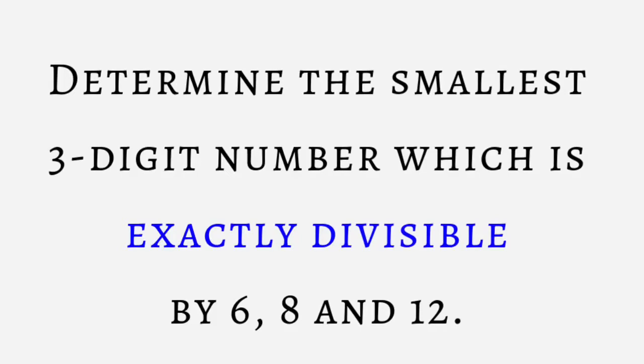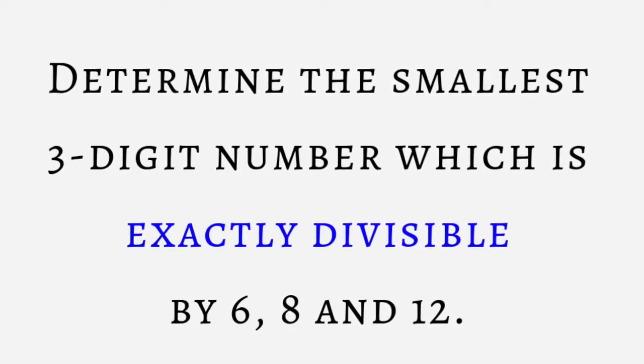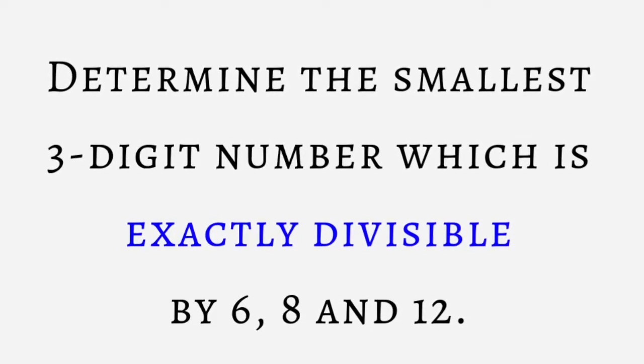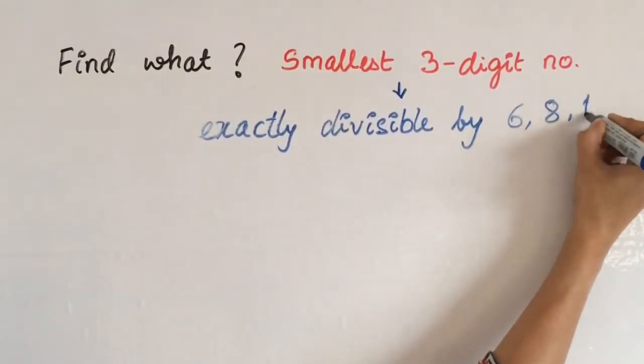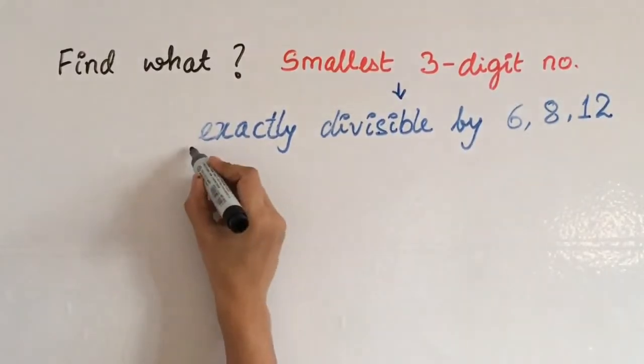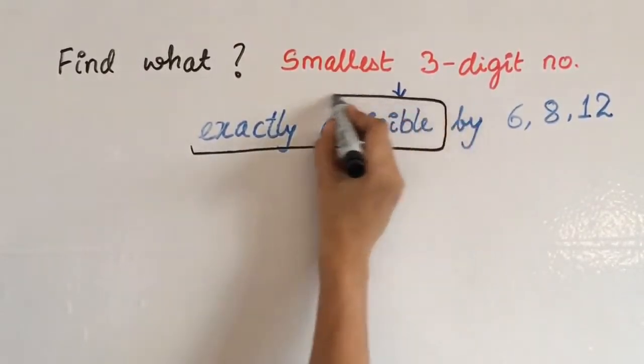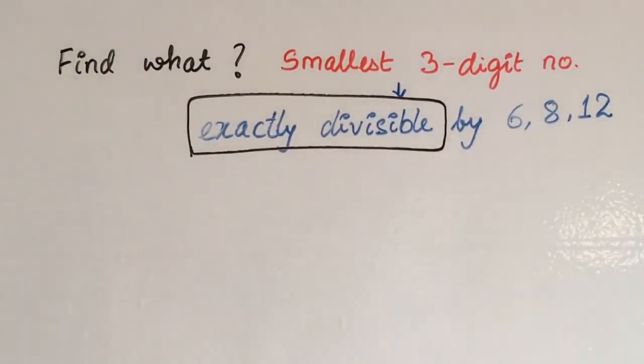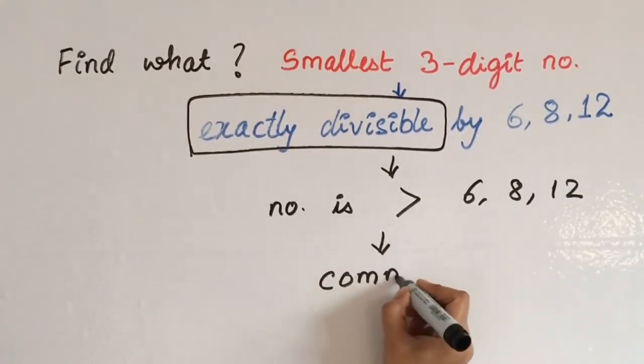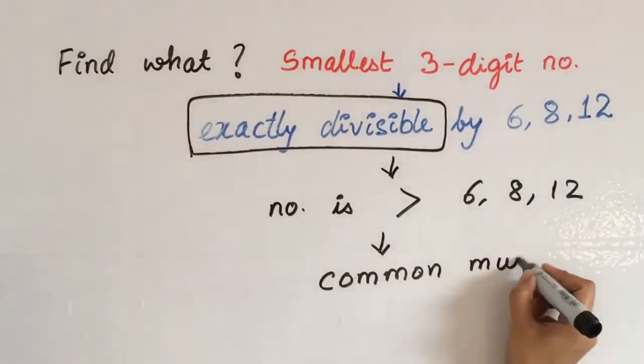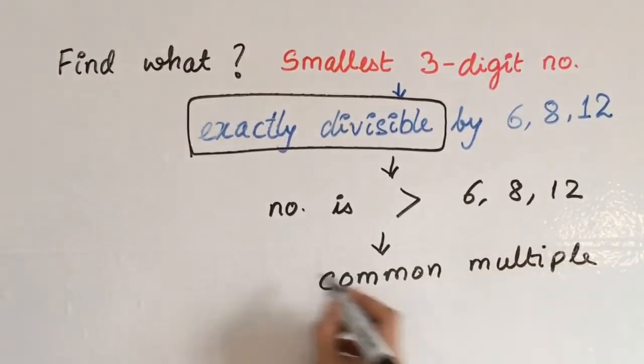Next question. Determine the smallest 3-digit number which is exactly divisible by 6, 8 and 12. When we have the word exactly divisible, that means the number will be bigger and there will be a common multiple that will divide this number. Therefore, what you have to find is a common multiple, that is LCM.